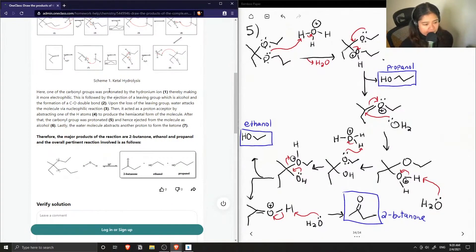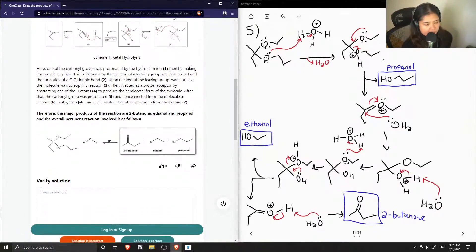Upon the loss of the leaving group, water attacks the molecule via nucleophilic reaction. Then it acted as a proton acceptor by abstracting one of the hydrogen atoms to produce the hemiacetal form of the molecule. After that the carbonyl group was protonated and hence ejected from the molecule as alcohol. Lastly, the water molecule abstracts another proton to form the ketone.